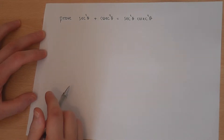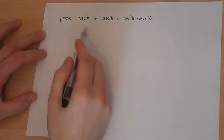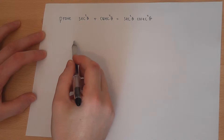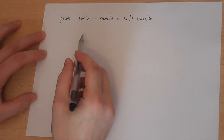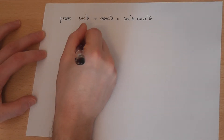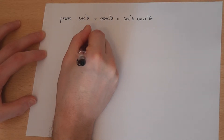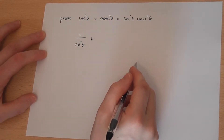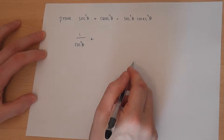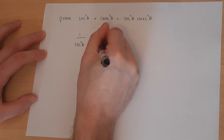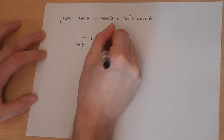This video looks at a little proof involving sec and cosec. Now sec is 1 over cos, so sec squared is 1 over cos squared theta. Now cosec is 1 over sine, so cosec squared is 1 over sine squared theta.